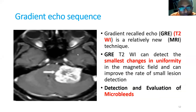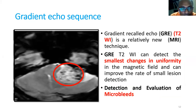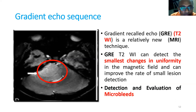Gradient echo (GRE) sequence is useful for cerebellopontine (CP) angle tumors. The two most common CP angle tumors are meningioma and acoustic neuroma. GRE sequence shows small changes in the background — in acoustic neuroma you can see cyst formations and hemorrhages, which you will not find in meningioma. So when there is doubt between meningioma versus acoustic neuroma at the CP angle, ask for the gradient echo sequence.